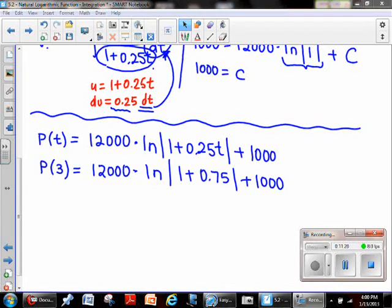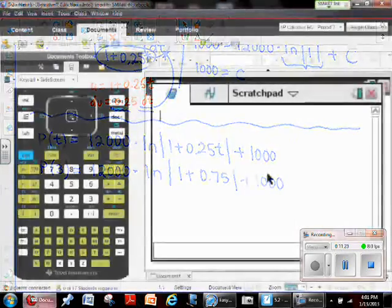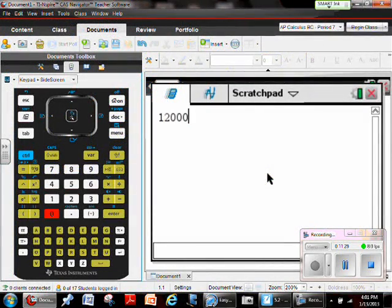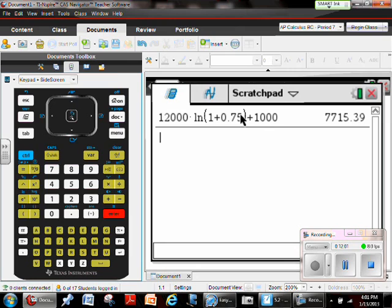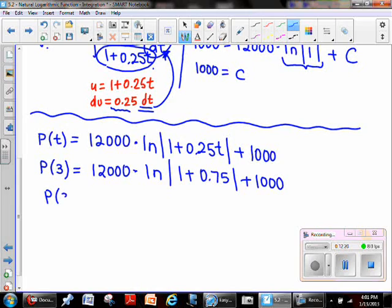So we're going to use our calculator. I brought up my TI-Inspire software. We're going to type in 12,000 multiplied by the natural log of 1 plus 0.75. The absolute value was part of our problem, but 1 plus 0.75 is definitely destined to be positive regardless. Plus 1000. I'm going to use control enter so that my final answer will be expressed as a decimal. So 7715.39 we could say would be our population.